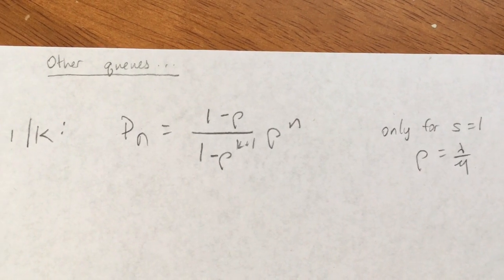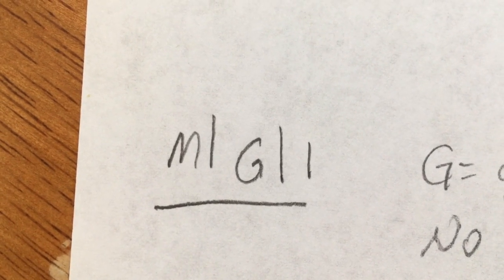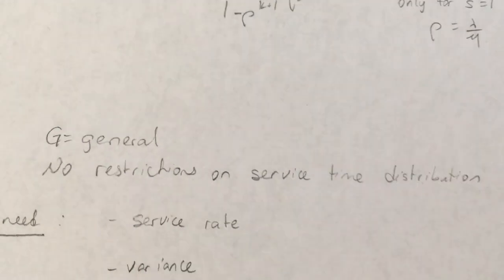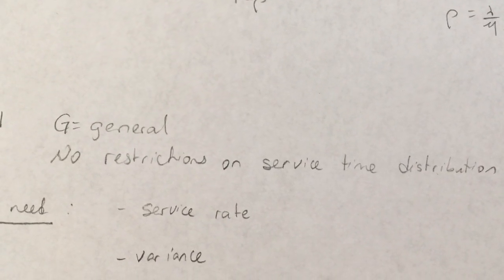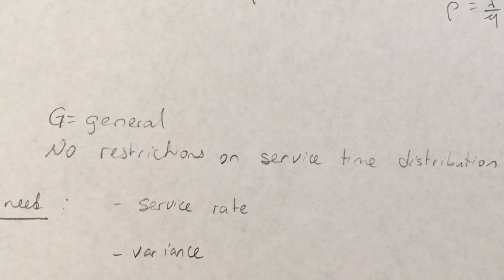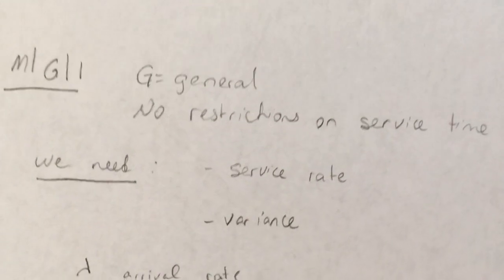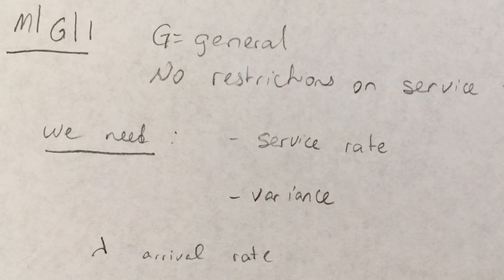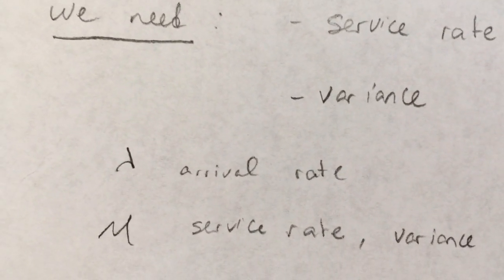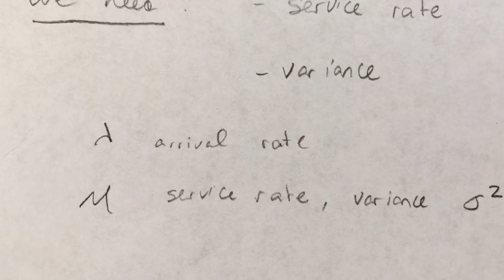M/G/1. This is a system with a general service time. What does that mean? Well, there are no restrictions on the service time distribution, so it can be normally distributed, uniformly distributed, but it's something where the service time distribution is not necessarily Markovian. You still have a Markovian arrival rate, an exponentially distributed arrival rate. Now you've got some service rate mu that has a variance of sigma squared.